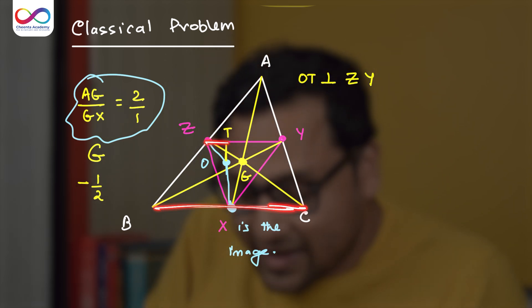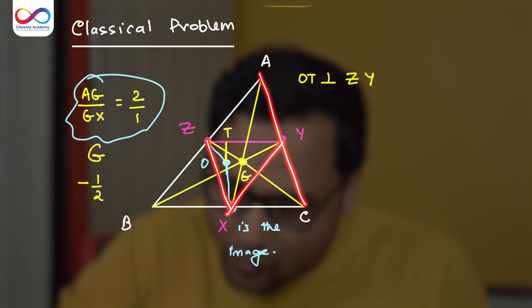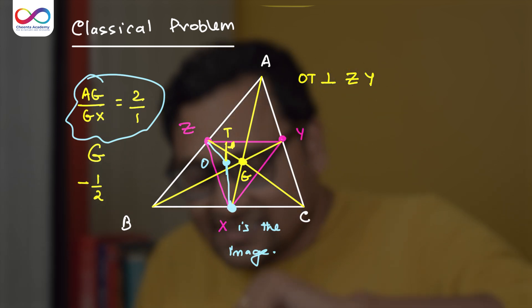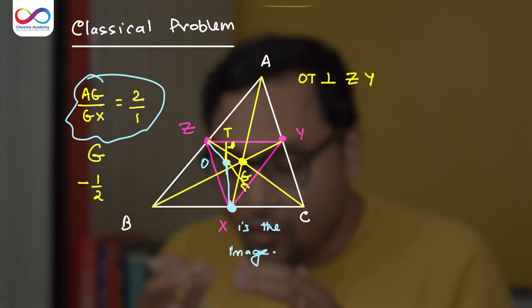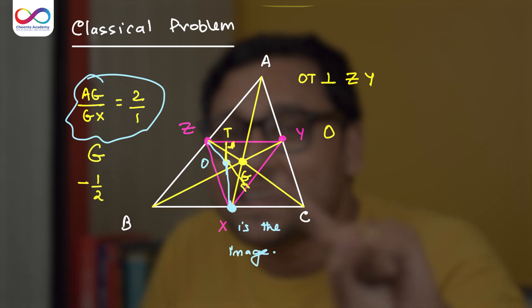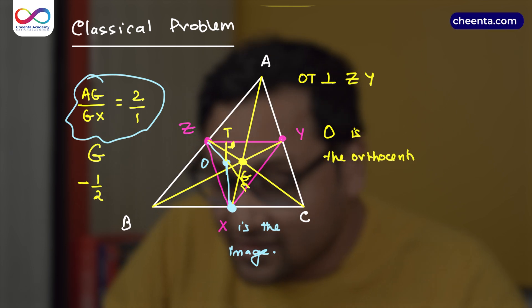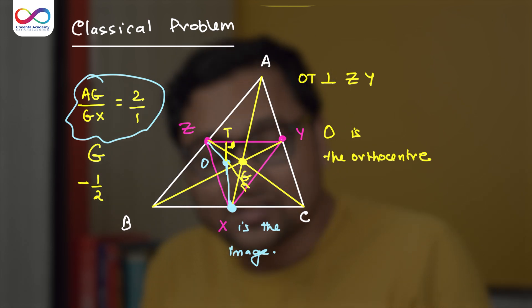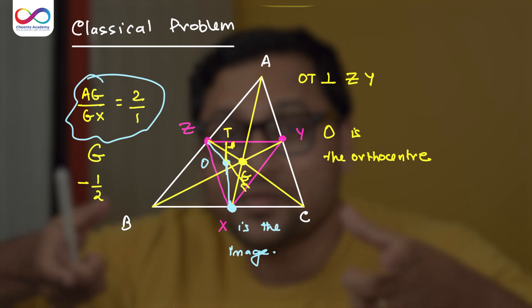So BC is parallel to ZY. AB is parallel to XY and AC is parallel to ZX. So what we have here essentially, we have two perpendiculars of the medial triangle meeting at O which means O which is the circumcenter of ABC is the orthocenter. Orthocenter means place where the perpendiculars intersect is the orthocenter of XYZ the medial triangle. Circumcenter becomes orthocenter of the medial triangle.